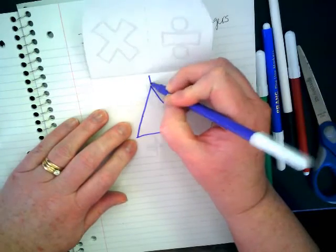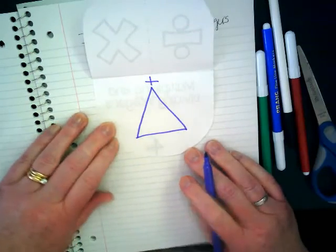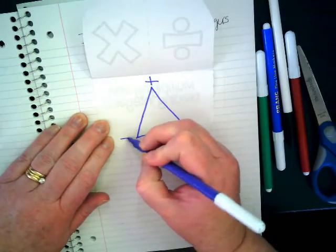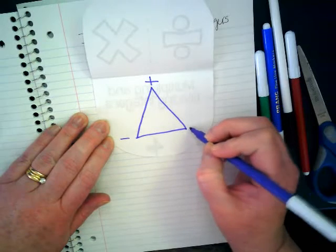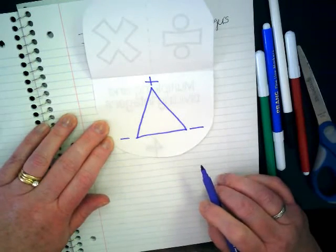At the top of it, I want you to put a positive sign, kind of like a crown up there. And on the bottom left and the bottom right, put two negative signs.